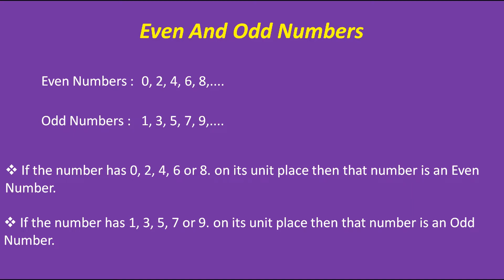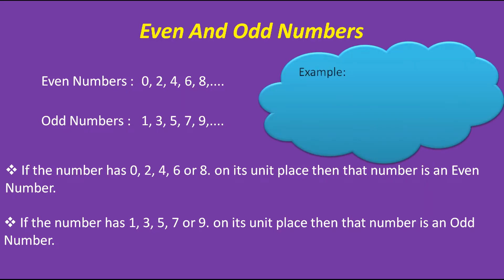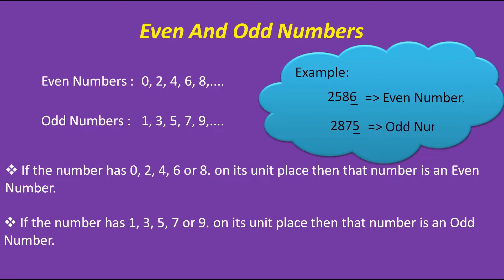Now, here I am taking two numbers as examples. Let's recognize whether each number is odd or even — we have to focus on its unit place. Here we have 6 on its unit place, which is even. Therefore, the number 2,586 is an even number. And the next number has 5 on its unit place, which is odd. Therefore, the number 2,875 is an odd number.